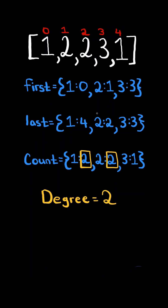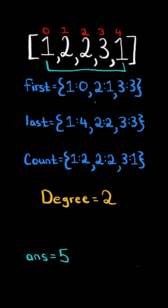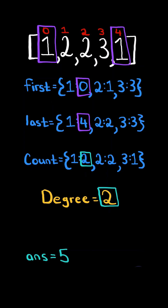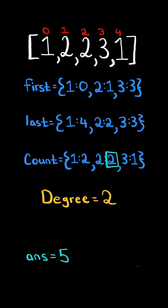From the count dictionary, we can find the maximum frequency, and this will be the degree of the array. Now we need to find the smallest length contiguous subarray with the same degree. Initially, we set our answer to the length of the array, then iterate through the count dictionary. If the frequency of the number equals the degree, we get the index of where it last appeared, which is 4, and the index of where it first appeared, which is 0. We get the length by taking last index minus first index plus 1. In this case, the length is 5, but it's not smaller than our answer, so we don't update.